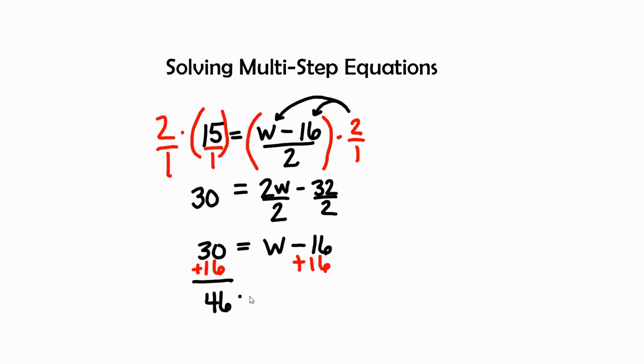46 equals w because our negative 16 and positive 16 cancel out. This is not necessarily in standard form, so I can rewrite it: w equals 46.